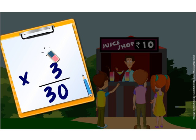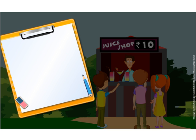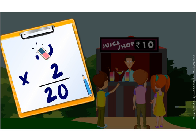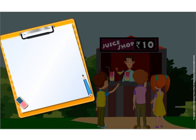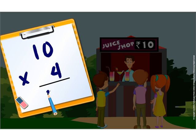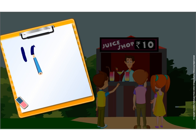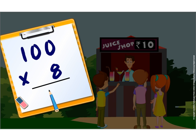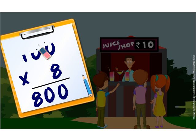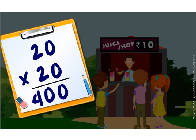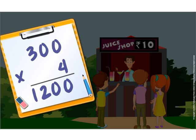Let us look at some more multiplication sums where one or both numbers are multiples of 10. 10 into 2 is equal to 20. 10 into 4 is equal to 40. 100 into 8 is equal to 800. 20 into 20 is equal to 400. 300 into 4 is equal to 1,200.